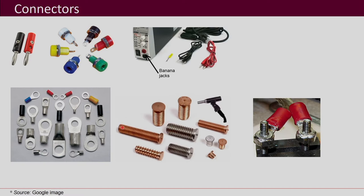For high power purposes where even banana jacks cannot be used, people use screws and what are called lugs. Here you can see that this is the screw which is actually a power terminal coming out, and then this lug is put on it. The lug may be screwed and sometimes solder may also be put on it. That is how high voltage and high current connections are formed with screws and lugs. These lugs are available in different sizes and a few different shapes as well.